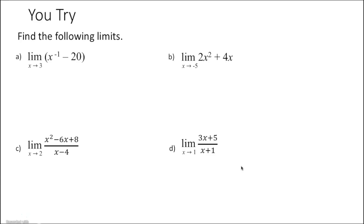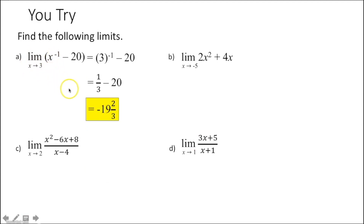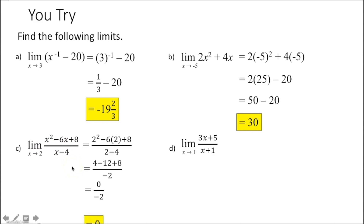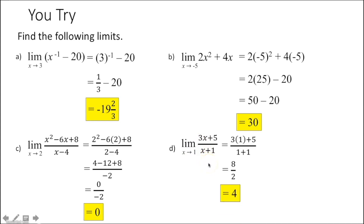You try. Plug in 3 for x since it's the limit as x approaches 3 — simplify and get negative 19 and 2/3. The limit as x approaches negative 5: plug in negative 5 for x and get 30. The limit as x approaches 2 of the rational function: plug in 2 for each x and get a limit of zero. Lastly, the limit as x approaches 1: plug in 1 for each x, simplify, and get a limit of 4.